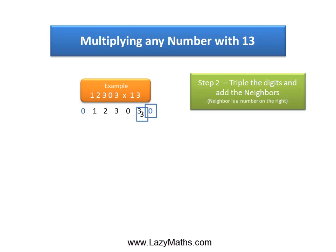So we start with 3 and 0 as our first set. Triple of 3 is 9 plus the neighbor 0 gives us a 9.